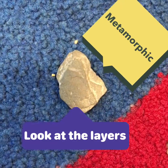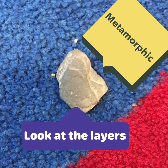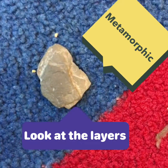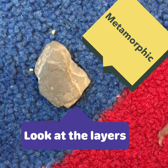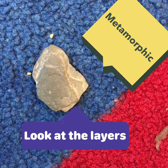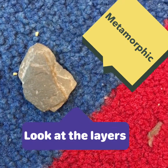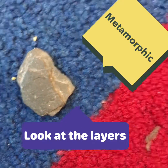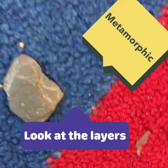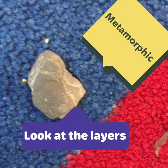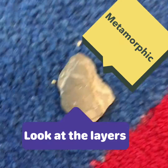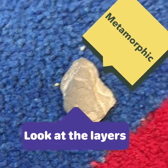Slate is a metamorphic rock. It has a muddy smell and is in layers. It can be grey, green, or purple. It is made from shale. Slate is used for roofs of houses.